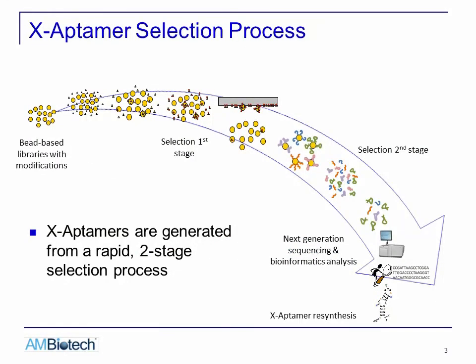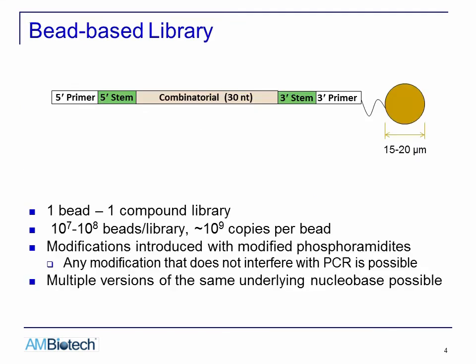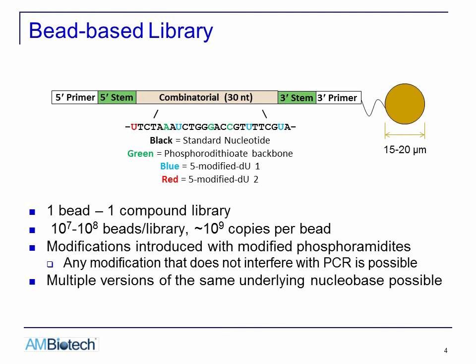I will describe the selection process for X-aptamers in detail. The selection begins with a bead-based library that is synthesized by solid-phase synthesis. Oligonucleotides on these beads are decorated with a wide range of chemical modifications. The partitioning steps are divided into two stages: the first is performed with the beads, and the second is performed in solution with oligonucleotides released from selected beads. After these two steps, the isolated material is amplified by PCR for next-generation sequencing. Bioinformatics analysis will determine the sequences of the X-aptamer candidates, which are then synthesized for characterization of binding.